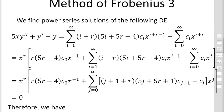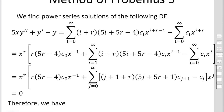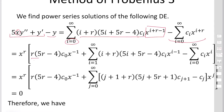We substitute this expression into the differential equation 5x·y'' + y' − y = 0. Combining the first two terms — due to multiplication by x — gives a sum with factor (i + r), and the combined coefficient yields the expression (5i + 5r − 4). Picking out only the first term by substituting i = 0 gives r·(5r − 4)·c₀·x^(r−1), followed by a sum starting from i = 1.